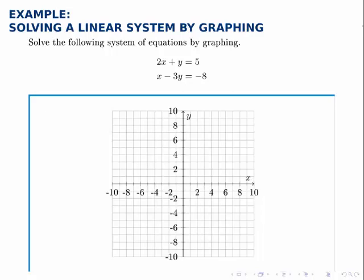Solve the following system of equations by graphing: 2x plus y equals 5 and x minus 3y equals negative 8.